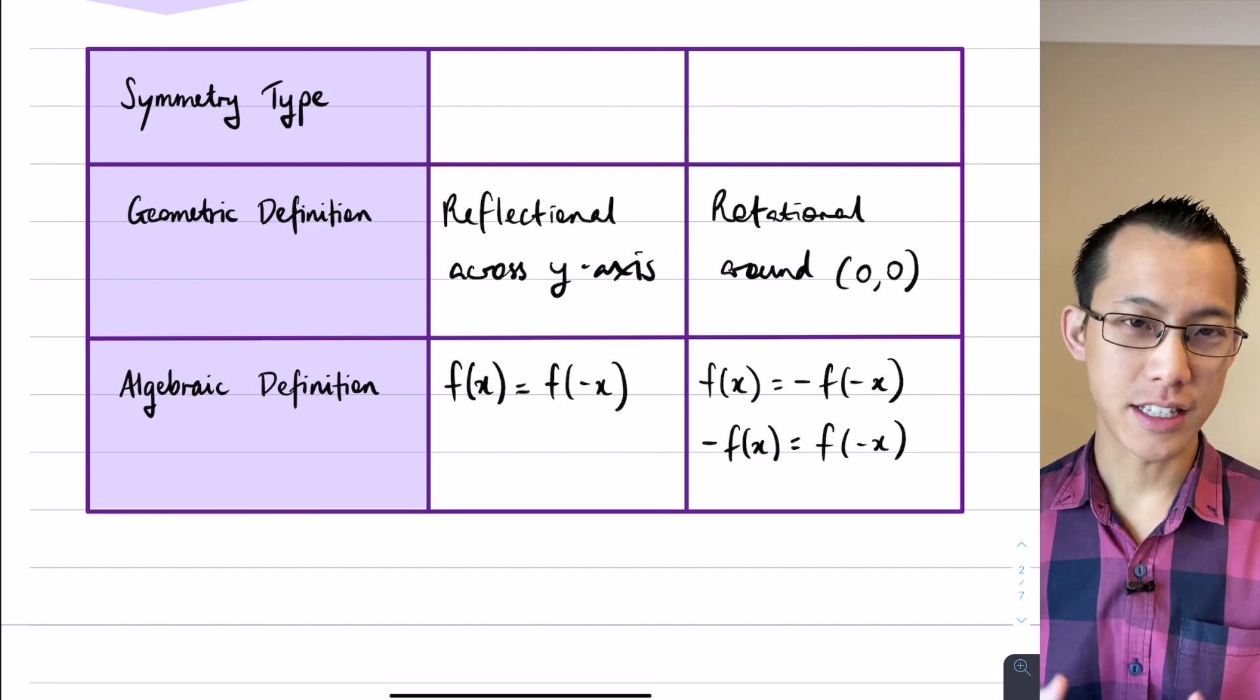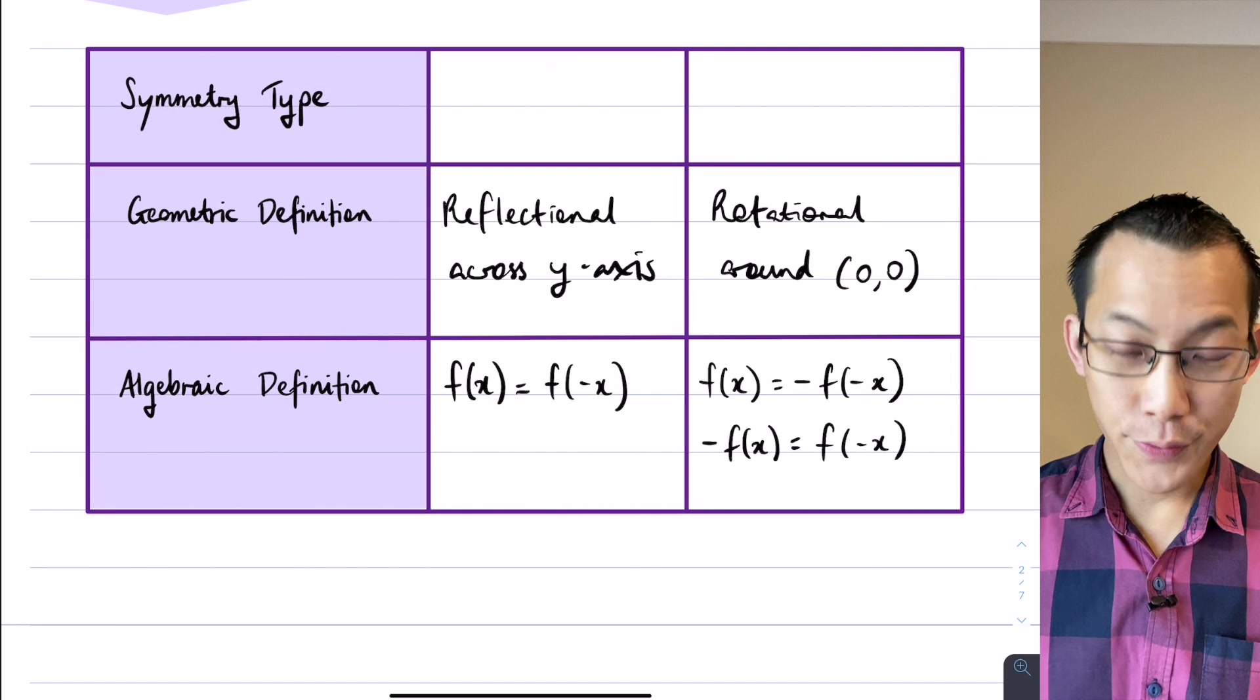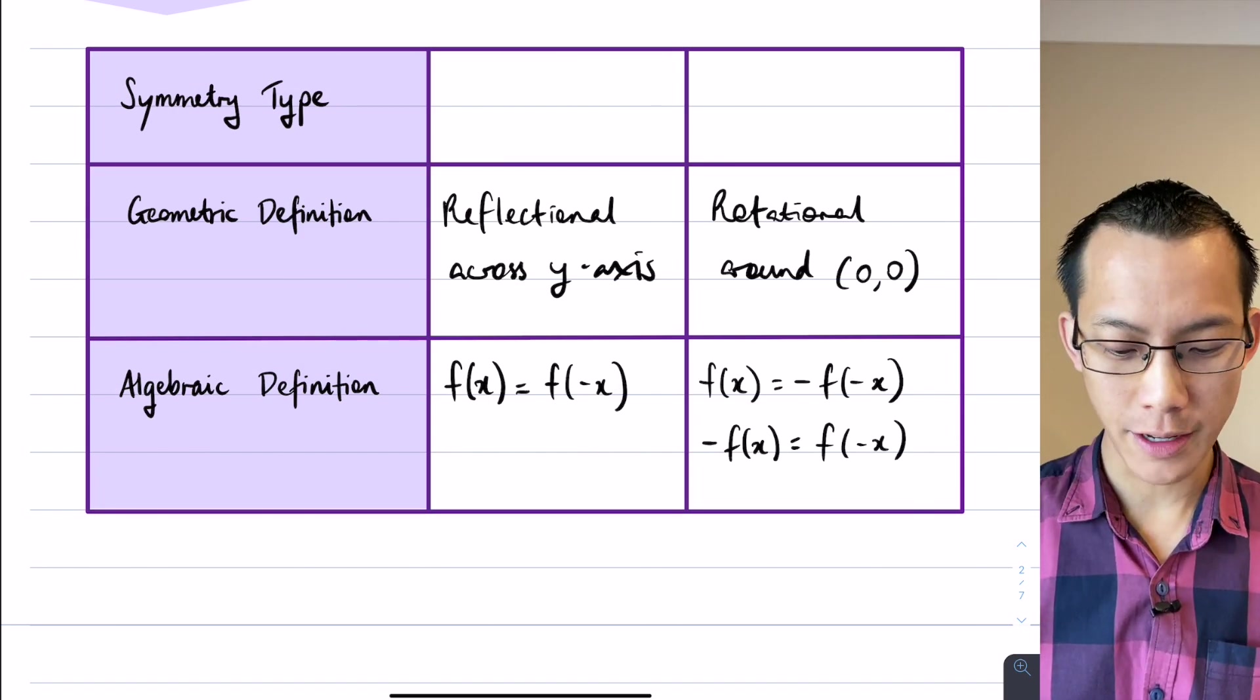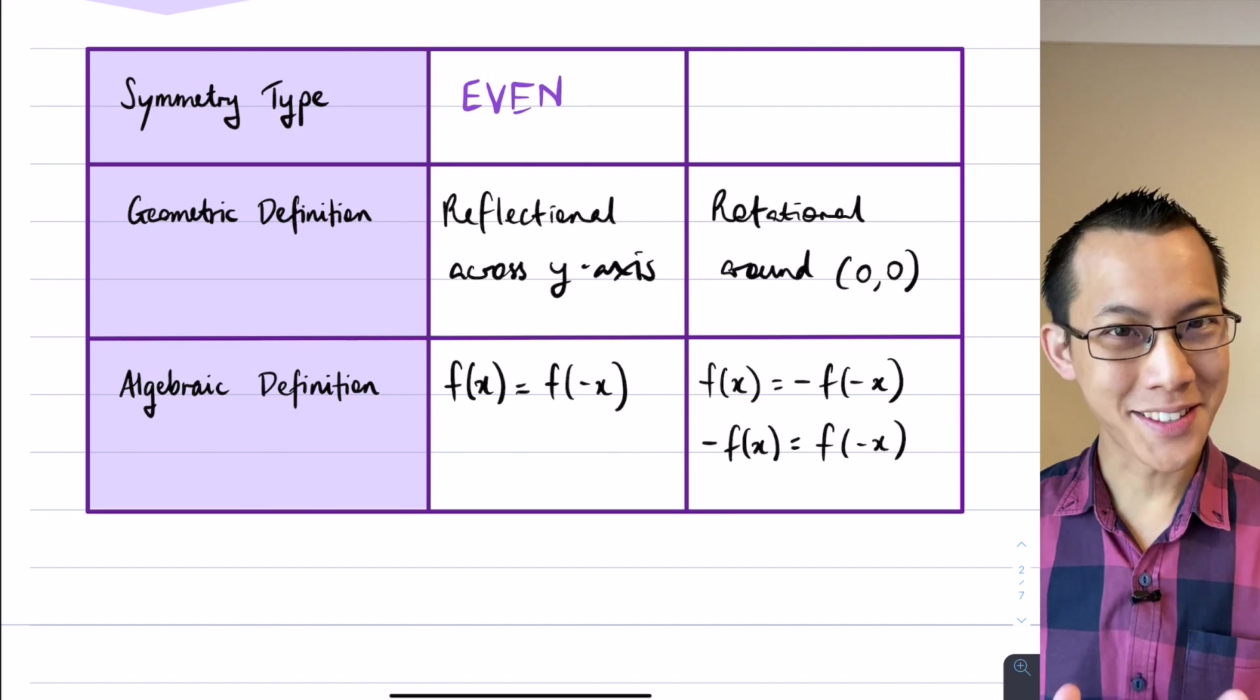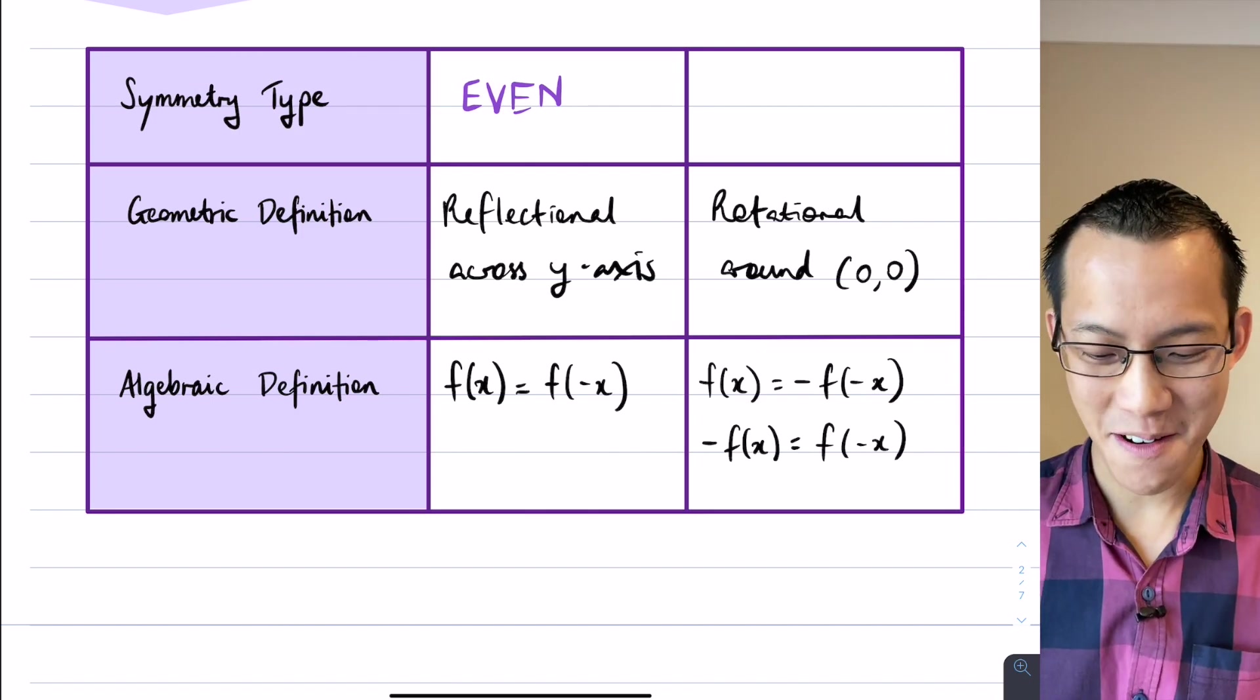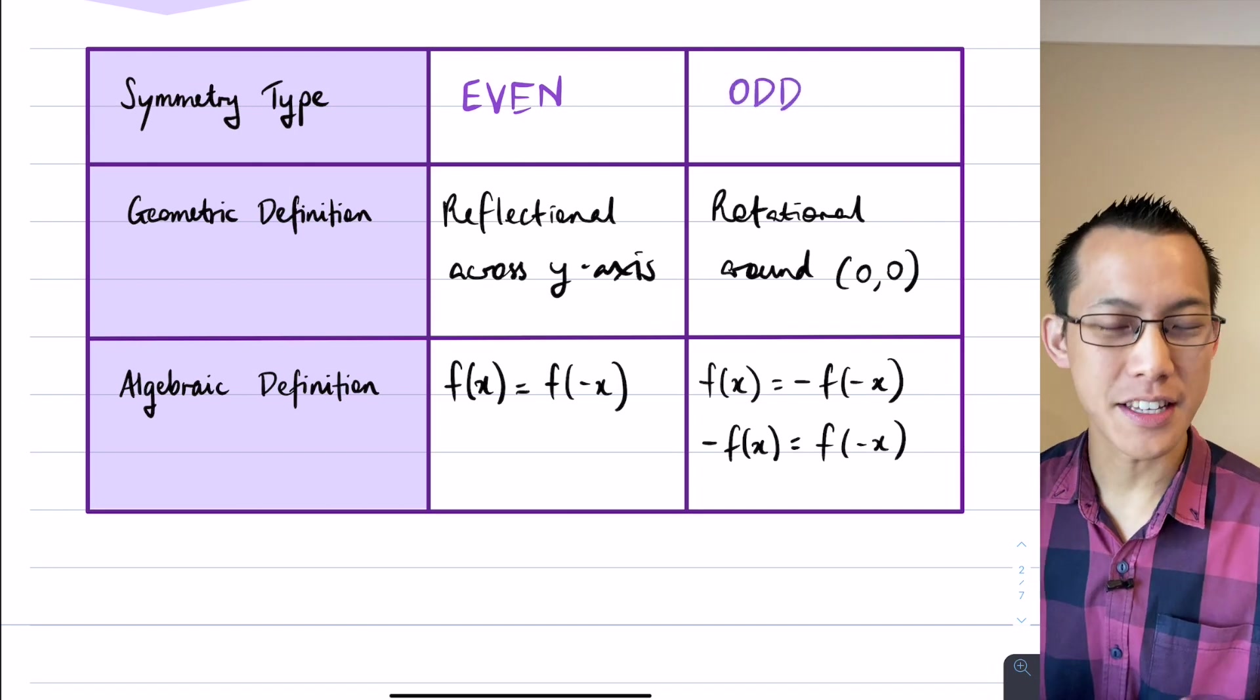And this is going to start to lead us to this next part here. These are not just called symmetry type 1 and symmetry type 2, they actually have special names. This first type of symmetry, reflection or symmetry when it comes to functions, we call it even symmetry, or we call the functions even functions when they have this kind of symmetry. And what's the opposite of even? Well, when you have rotational symmetry around the origin, we call that an odd function. We say it has odd symmetry.